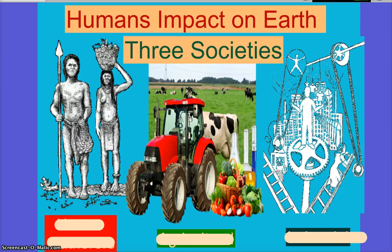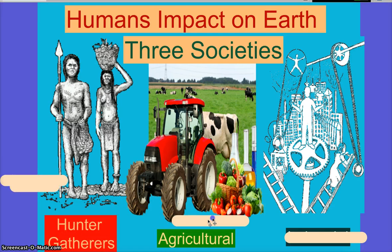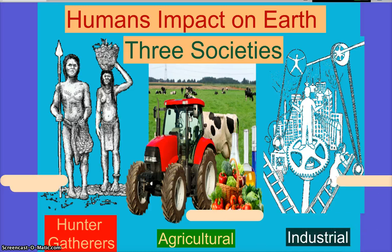So, refresher of where we are: we did birth of earth, we did layers of earth or spheres in earth, and now we're going to do societies on earth and their impact. We're going to start learning more about impacts because from here on that's really what we're going to talk about. Who can name one of the three societies on earth? Hunter-gatherers — good. What else? Agricultural and industrial — perfect.